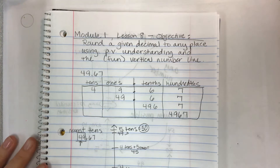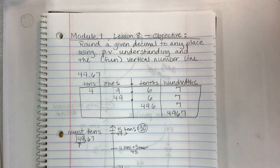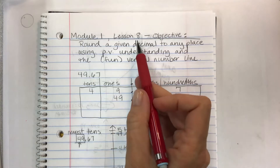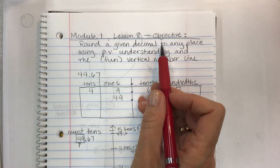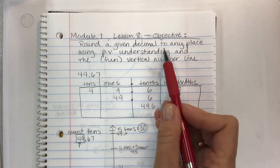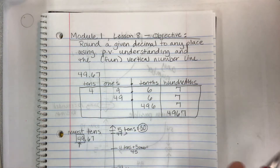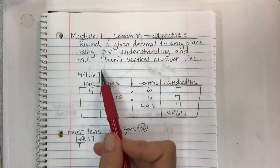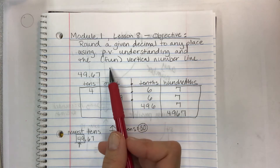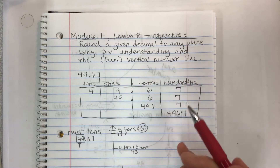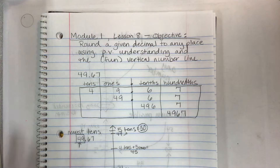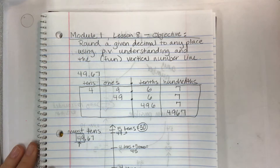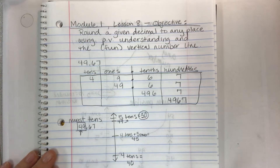Hey there kids! I'm gonna try to zip through this lesson quickly. This is module 1 lesson 8 and it kind of piggybacks on lesson 7 where we're rounding a given decimal to any place value position using place value understanding and this super fun vertical number line — and that's sarcasm right there because I strongly dislike the vertical number line. Anyway, let's use it.